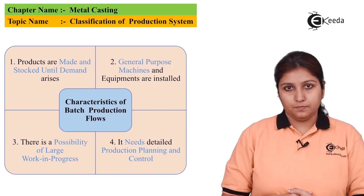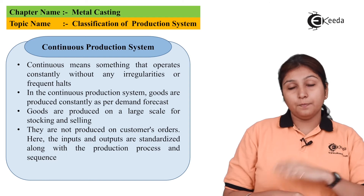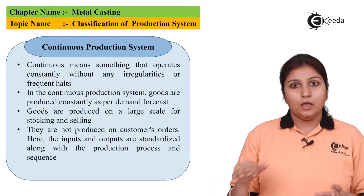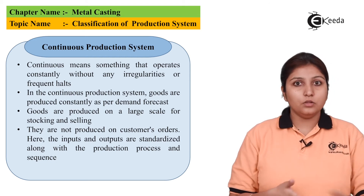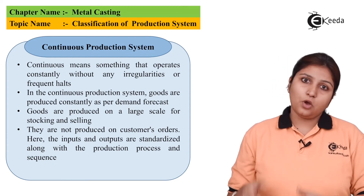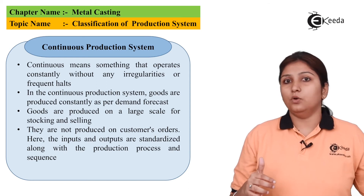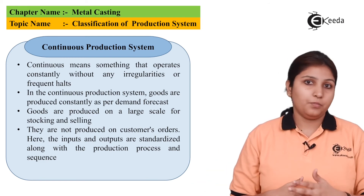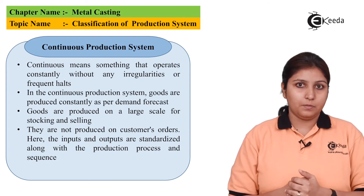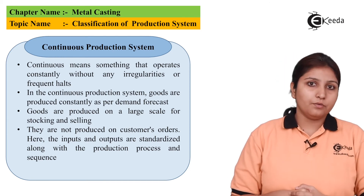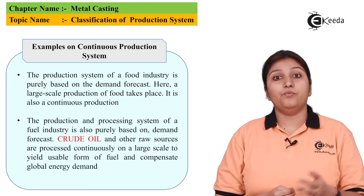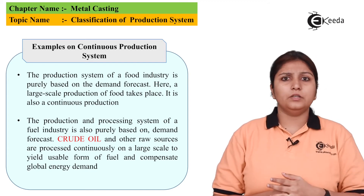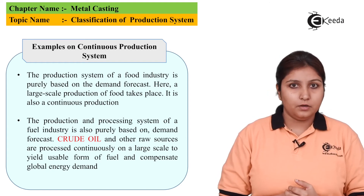Now we come to the continuous production system. As compared to intermediate, where production was only done when there was a requirement and was irregular, in continuous — as the name says — production is done continuously. Forecasting plays an important role, but production is done continuously. As the goods are made, they are stocked and sold. As soon as demand comes, it goes from stock and its sale is done. Production is not stopped — for example, toothpaste or a pen — because market demand is there at every point of time. Examples include food industry, packaging industry, crude oil industry, pen, toothpaste, and any industry where production is done continuously based on market demand.